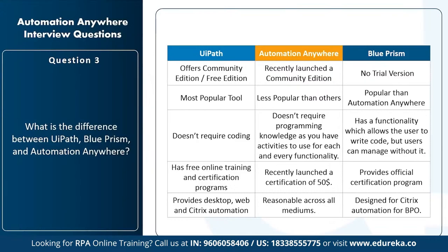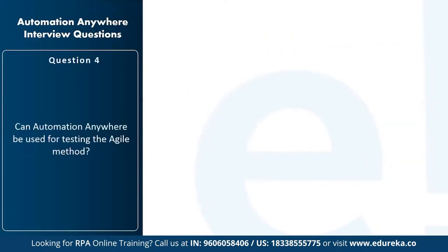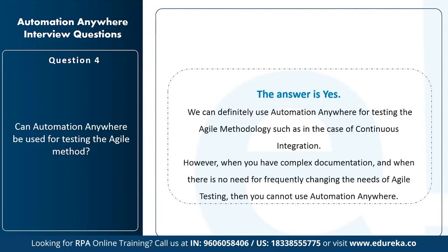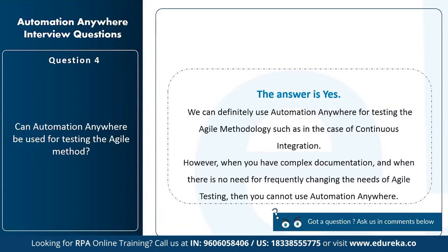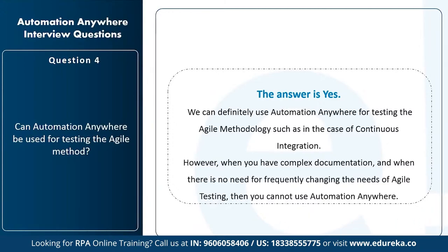Next question: can Automation Anywhere be used for testing the agile method? Yes, it can be used for agile testing, such as in continuous integration. However, it's not advisable when you have complex documentation and there's no need for frequently changing requirements. So it's suitable for agile testing in CI contexts, but not recommended for complex documentation scenarios with infrequent changes.